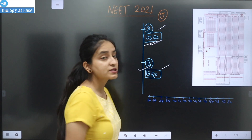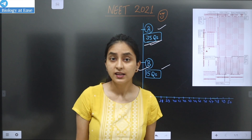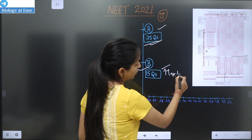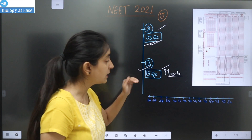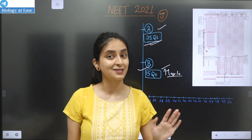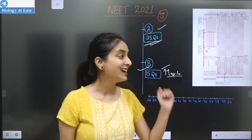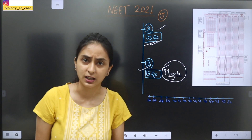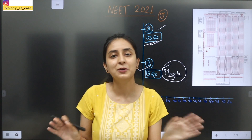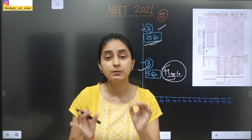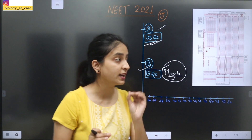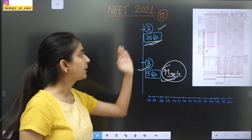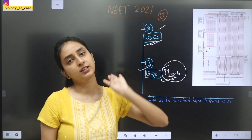If we talk about Section B, you have 15 questions, but you can attempt a maximum of 10 questions. Having 15 questions in Section B doesn't mean you have to attempt all of them. You can attempt a maximum of 10, or fewer if you like. In Section A, you can attempt maximum 35.